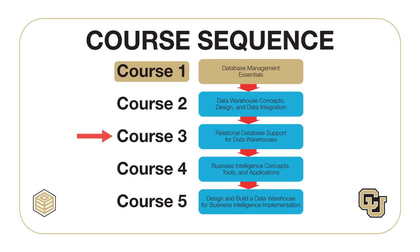The third course covers analytical queries, physical design, and summary data management — key features provided in relational database management systems to support data warehouses. The fourth course covers decision-making concepts, business intelligence platforms, business reporting and visualization, and business performance management. The fifth course provides a capstone project to integrate the skills and concepts from the other courses in the specialization, featuring a case study derived from an actual business intelligence project.